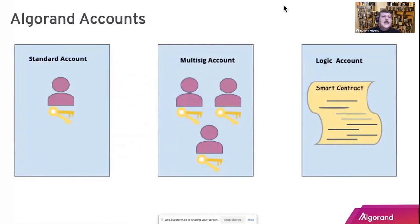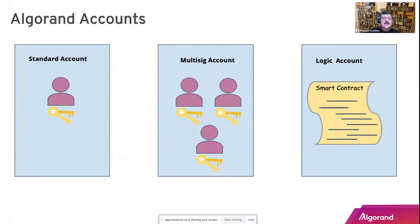Let's talk about accounts. You have a standard or single account — like Russ or Ryan. Then you have a multi-sig account, which is like a board of directors where maybe seven or eight directors, say four or five, must agree on a particular transaction in order for it to get written to the blockchain. That's very useful when working in a team environment. And then you have a logic account or lsig that does the signing — if it returns true, it signs the transaction; if false, it fails.